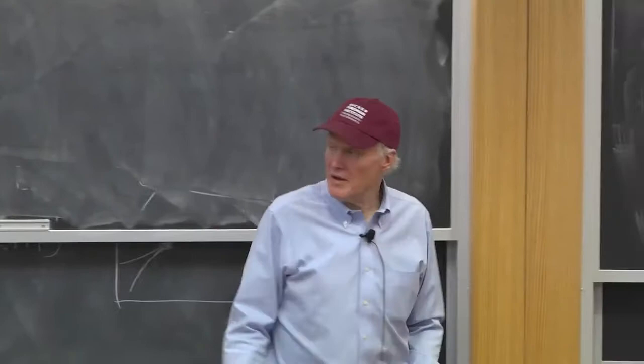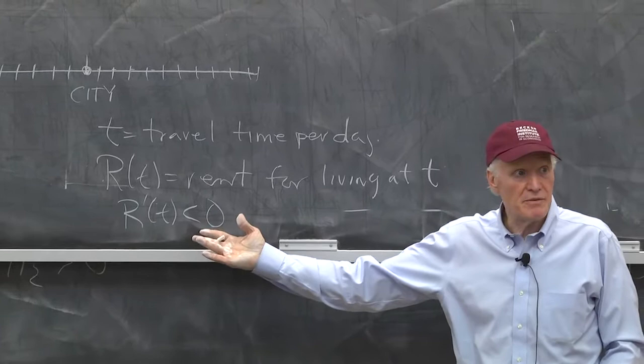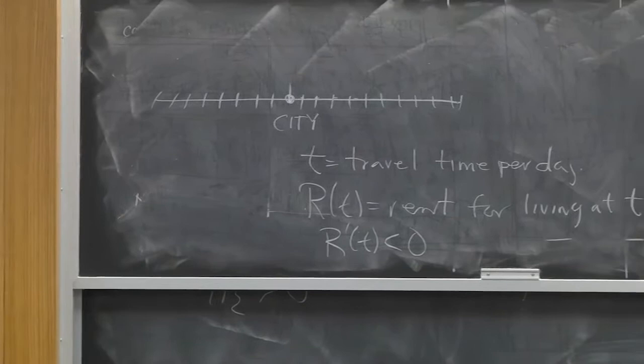Everybody would prefer to have less travel time. So in equilibrium, you're going to have to reward you for traveling farther by giving you cheaper rent. That's going to be this model. And what we want to know is what can we say about this rent function? What is it going to look like?